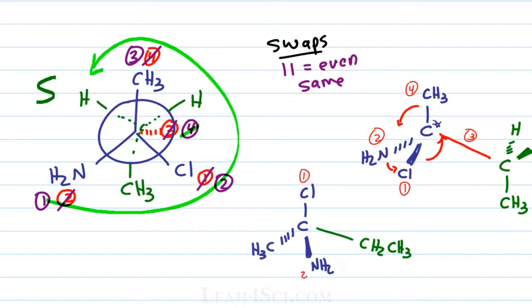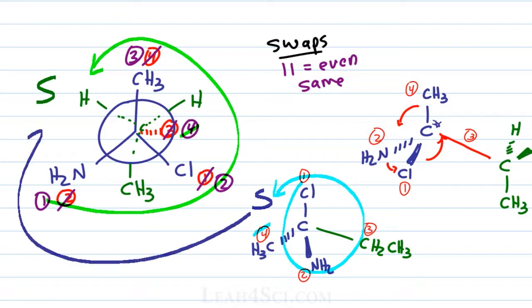Let's reprioritize. We have 1 for chlorine, 2 for nitrogen, 3 for ethyl, 4 for methyl. Number 4 is in the back where we want it. Cancel out number 4, trace the path from 1 to 2 to 3, and look at that—all that hassle just to prove that once again it is S.